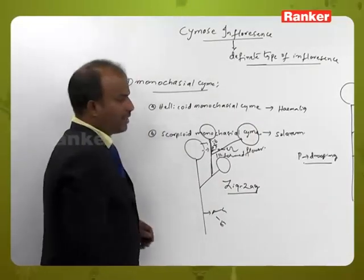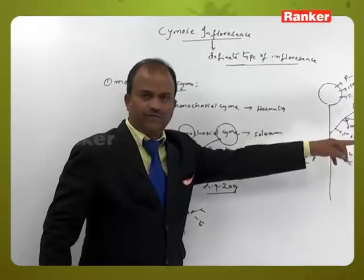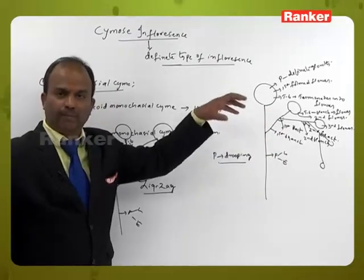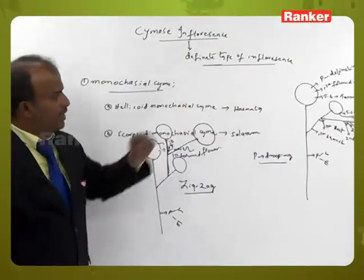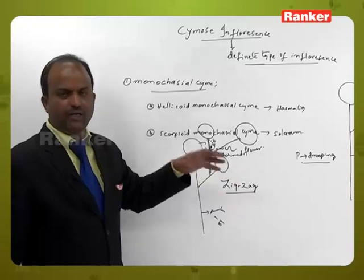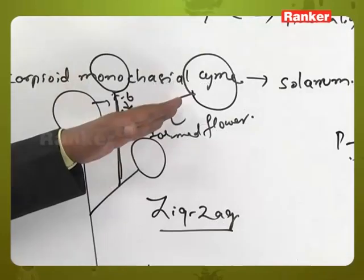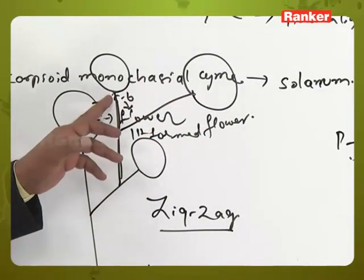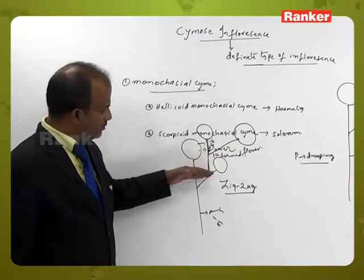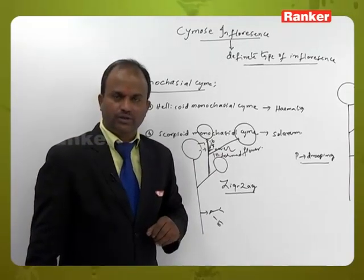Here branches are arising in zigzag manner. In helicoid monochasial cyme, branches arise from one side so weight occurs towards one side and the peduncle shows drooping. But in Solanum (scorpioid), branches arise in zigzag manner so weight is not concentrated on one side, and the peduncle does not show drooping.